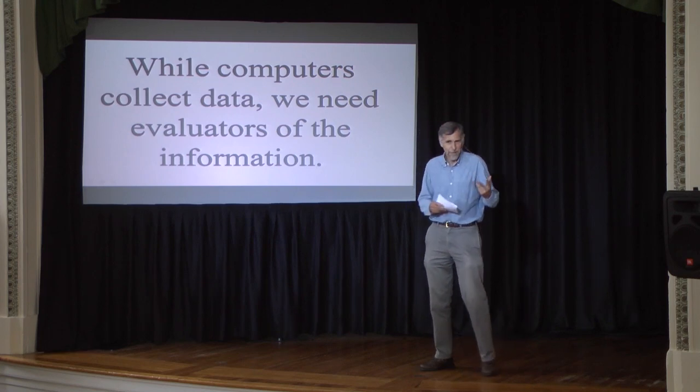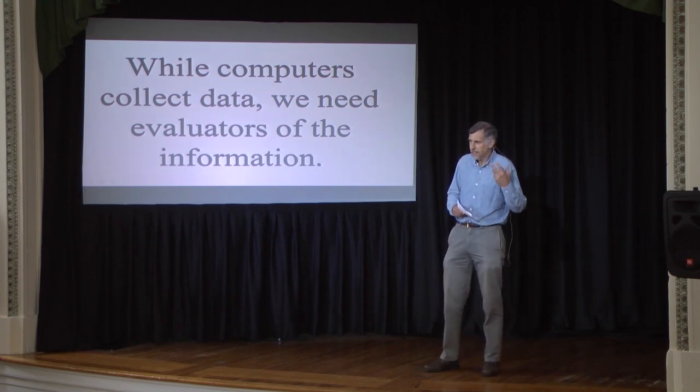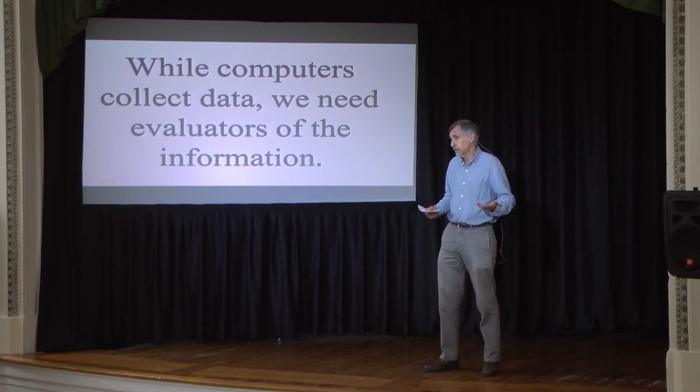We have silicon-based life forms that can collect masses of information — computers. What we need are wise and astute carbon-based life units. Us. So the larger the collections of information, then we need astute people who can sort through the information, who can interpret its meaning, and make judgments about its significance. Then we can make good use of all those information riches.